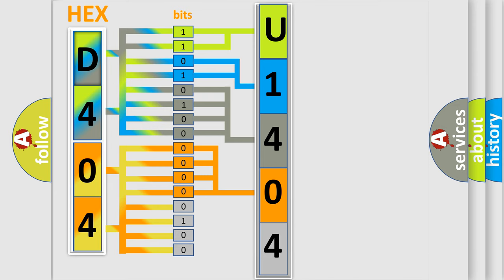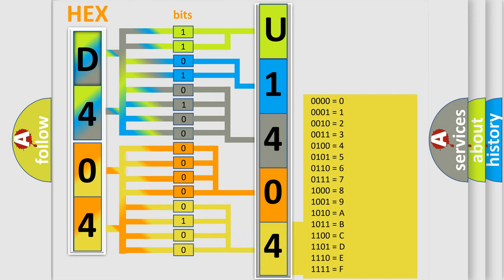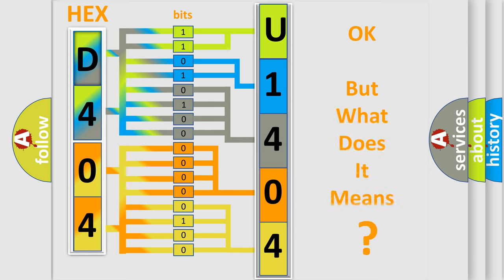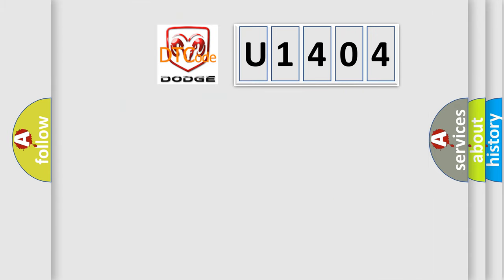A single byte conceals 256 possible combinations. We now know in what way the diagnostic tool translates the received information into a more comprehensible format. The number itself does not make sense to us if we cannot assign information about what it actually expresses. So, what does the diagnostic trouble code U1404 interpret specifically for Dodge car manufacturers?